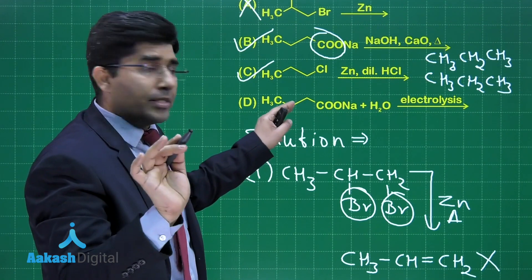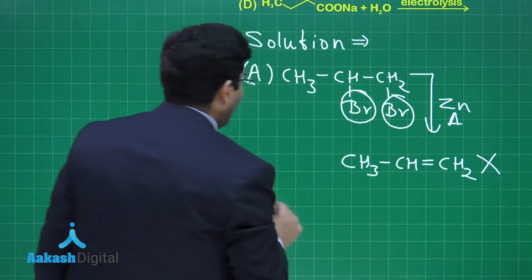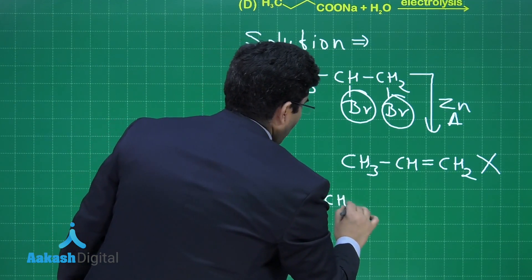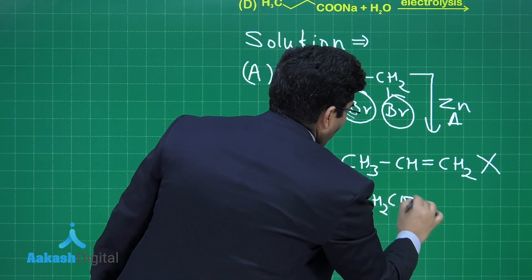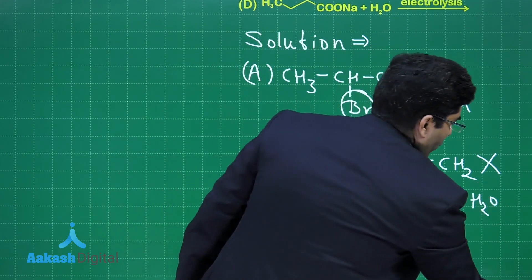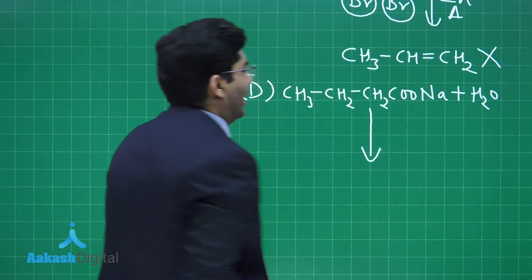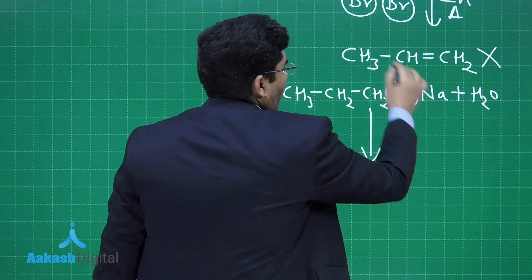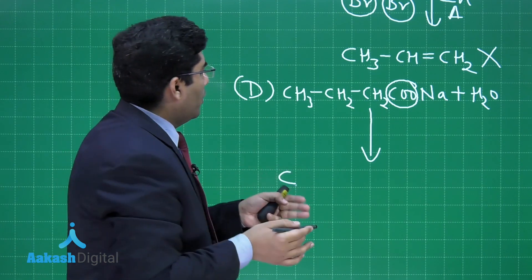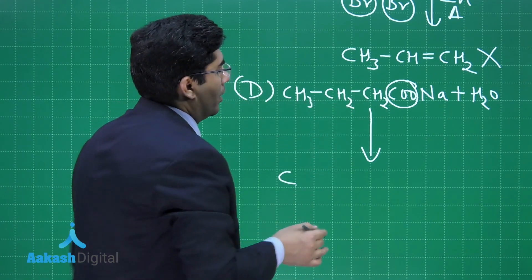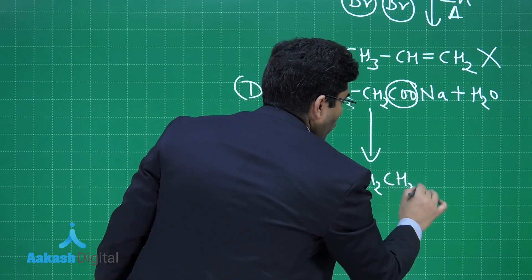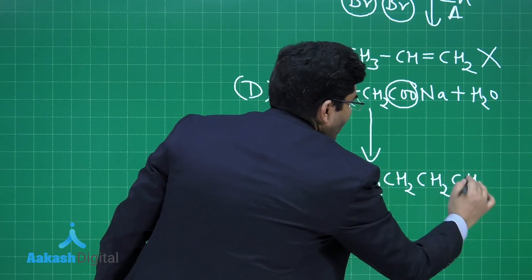The last one, this is Kolbe electrolysis. If we talk about the option number D, the reaction is given to us CH₃-CH₂-COO⁻Na⁺ plus H₂O. If we electrolyze it, we have studied that it is written in NCERT, decarboxylation will take place and after that we will get a product having the number of carbon atoms double of the number of carbon atoms given in this particular compound. So the answer will be CH₃-CH₂-CH₂-CH₂-CH₂-CH₃.